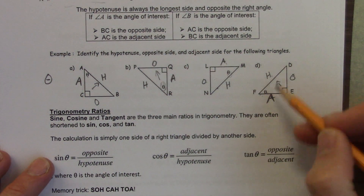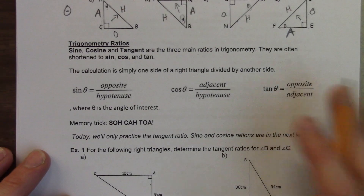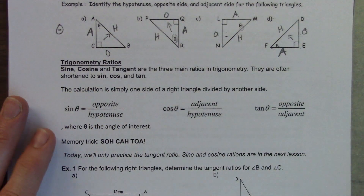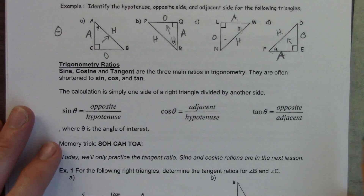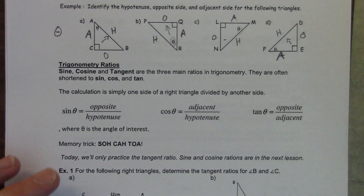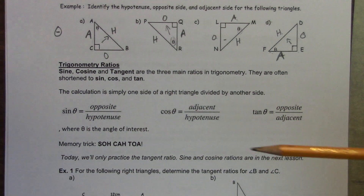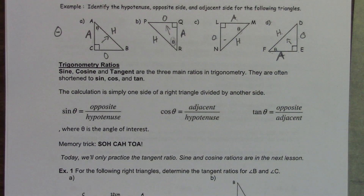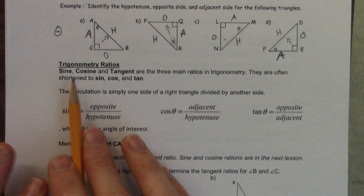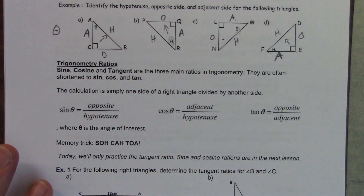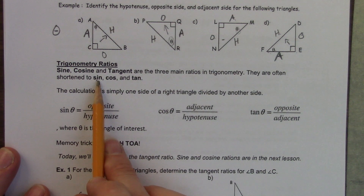Trigonometric ratios - this is what S, C, and T stand for: sine, cosine, and tangent. You're going to be hearing this a lot for the next two chapters. There are three main ratios in trigonometry, often shortened to sine, cos, and tan. You might have seen these on your calculator.